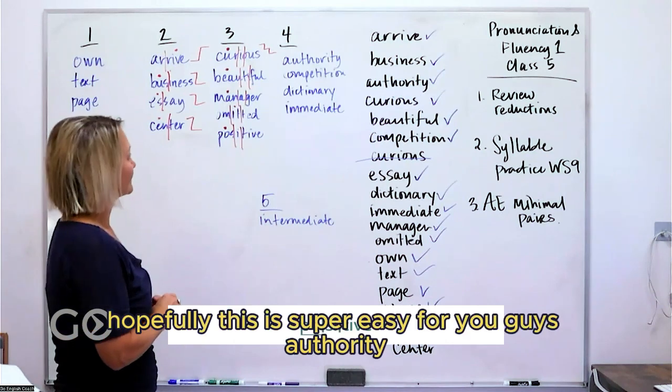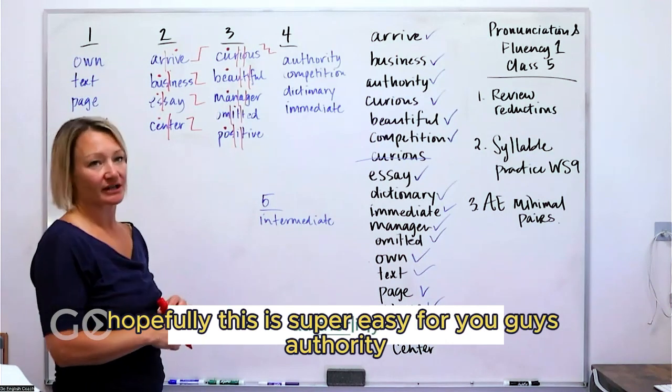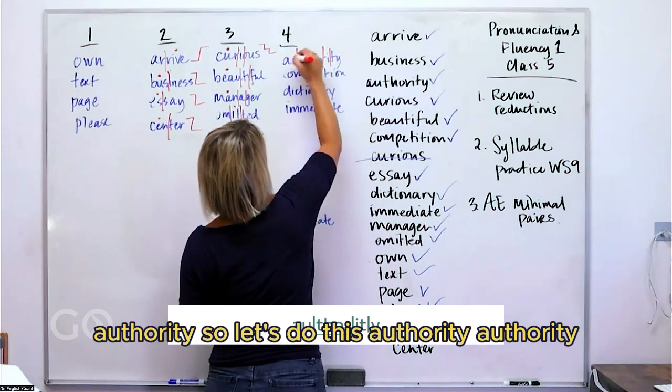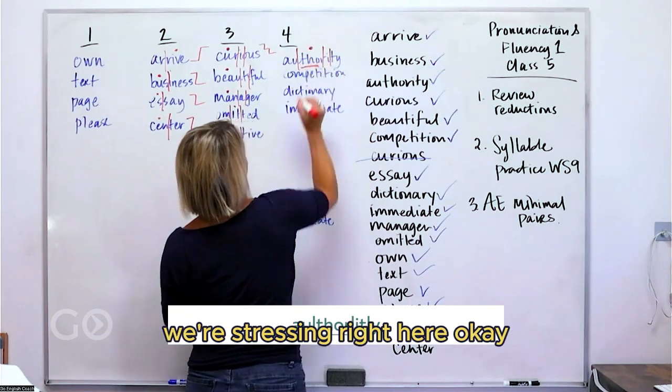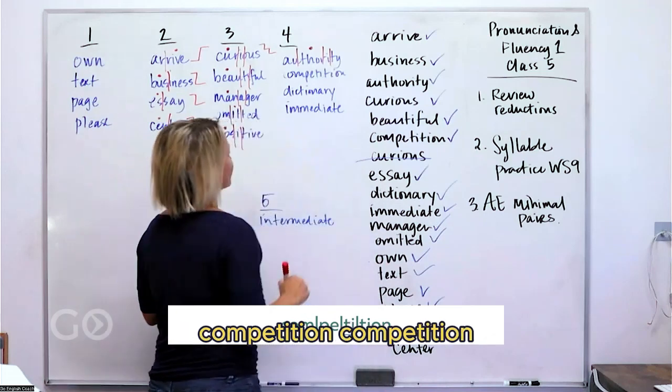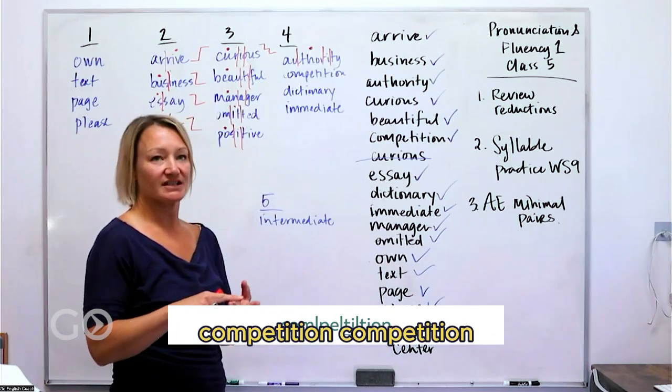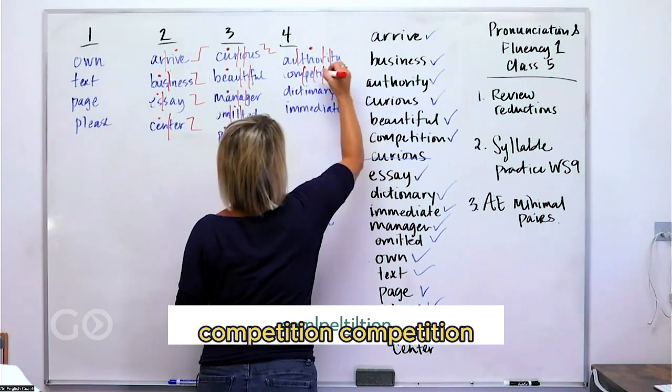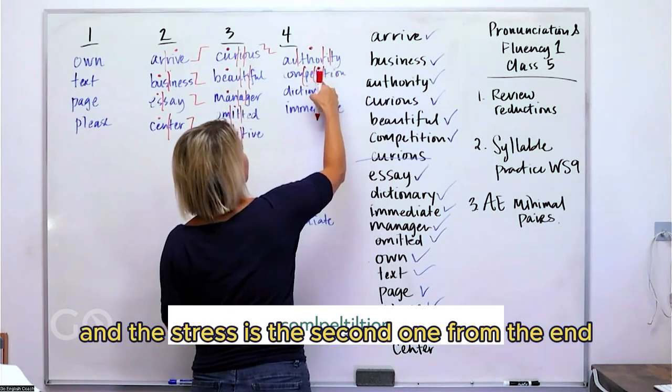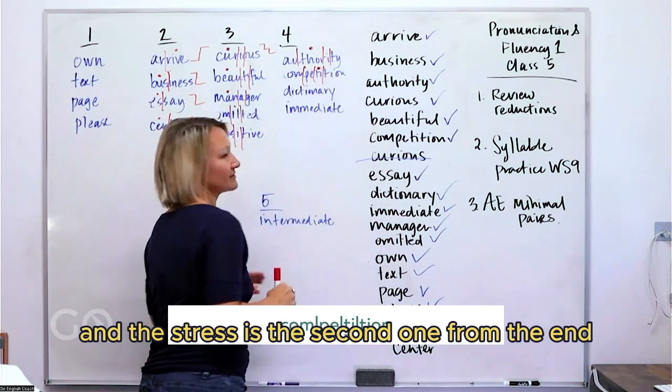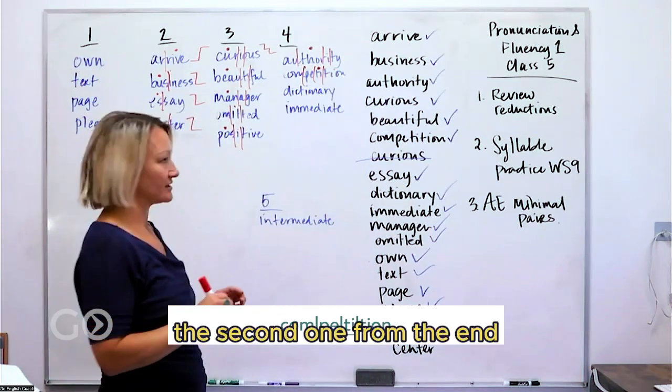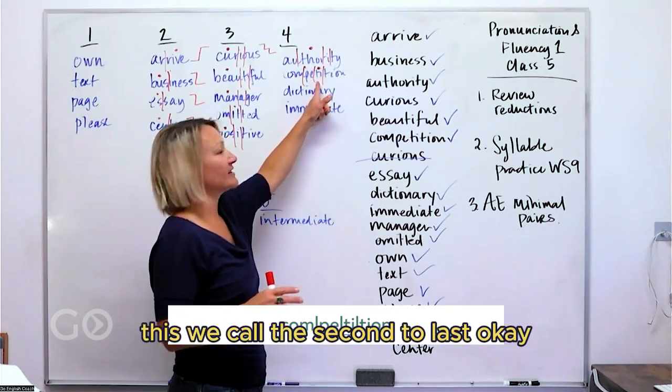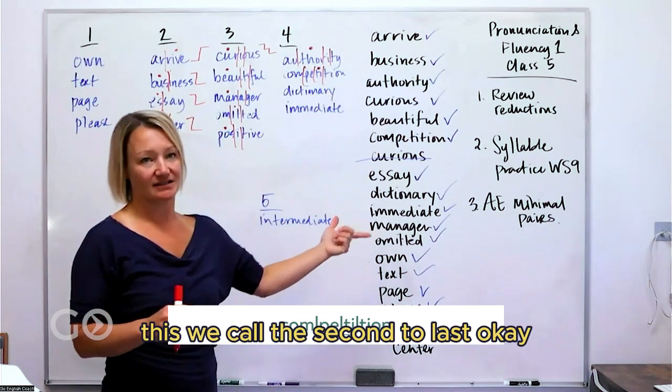All right. Hopefully this is super easy for you guys. Authority. Authority. So let's do this. Authority. We're stressing right here. Competition. Competition. And the stress is the second one from the end, or we can say second to last. So this is the last syllable. This we call the second to last.